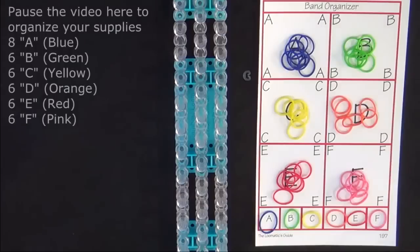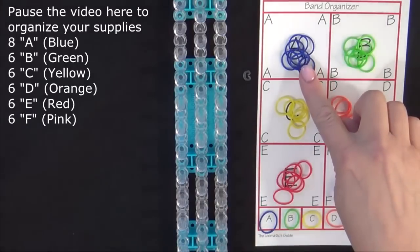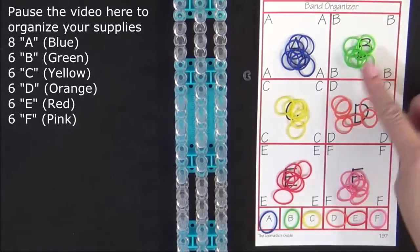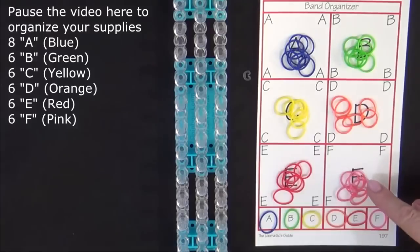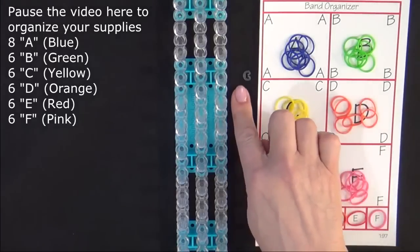To make this bracelet you will need 8 A colored bands and 6 each of B, C, D, E, and F. You'll also need a C clip.